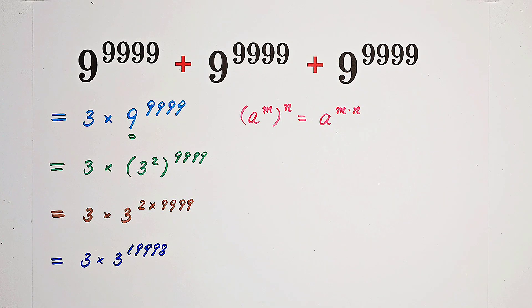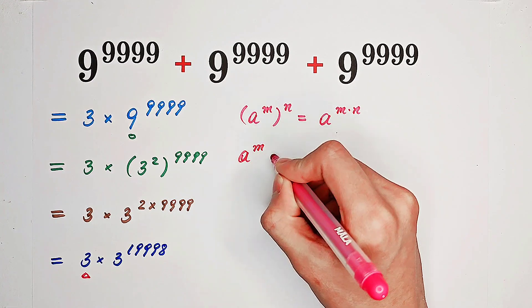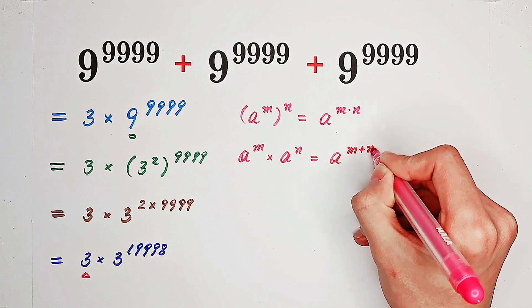Now, what shall we do with this 3? We use another formula. A to the power of m times A to the power of n equals A to the power of m plus n.